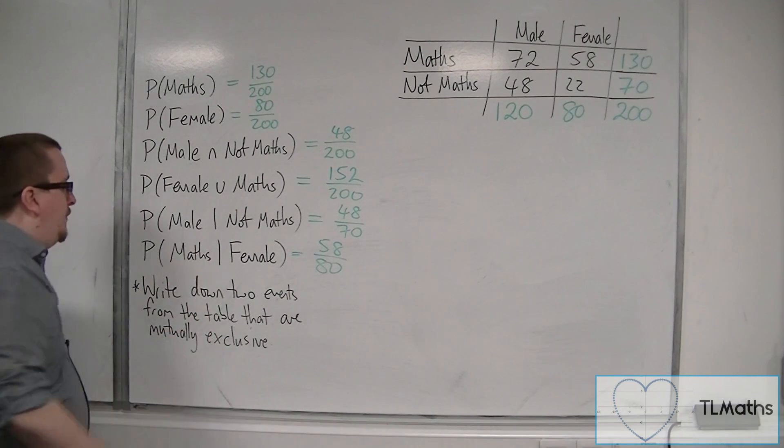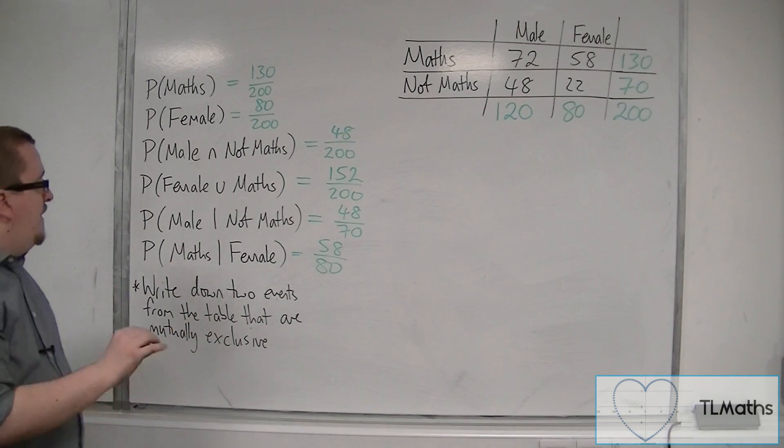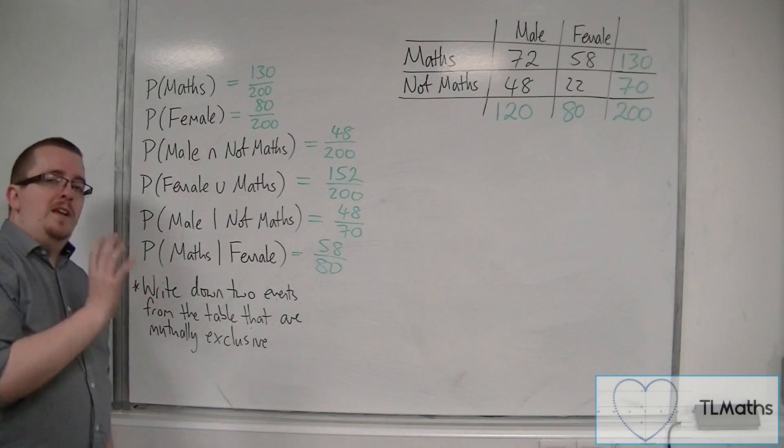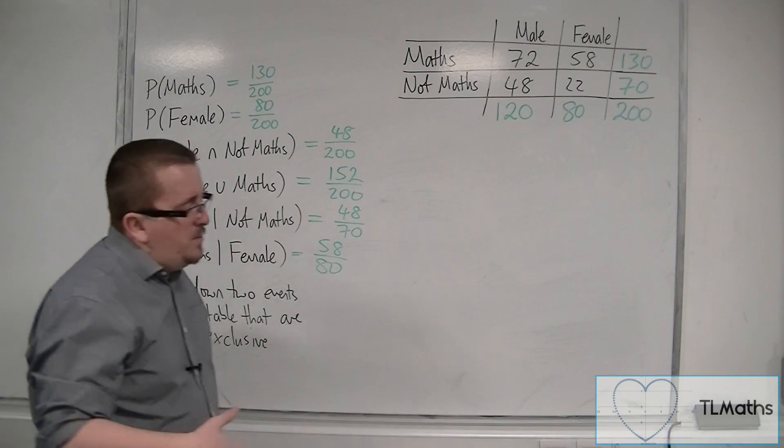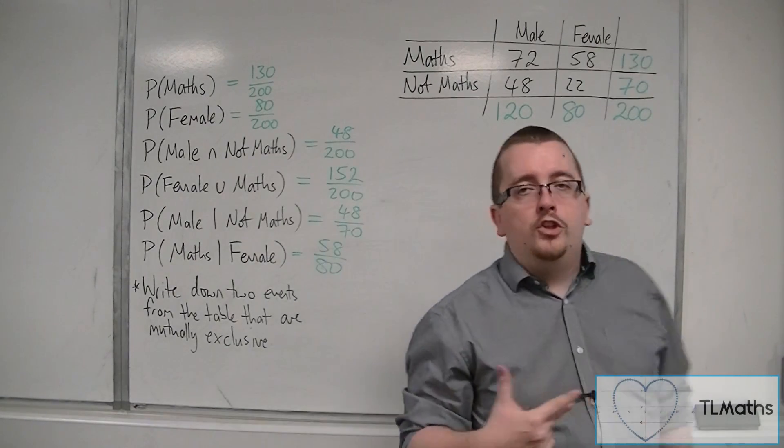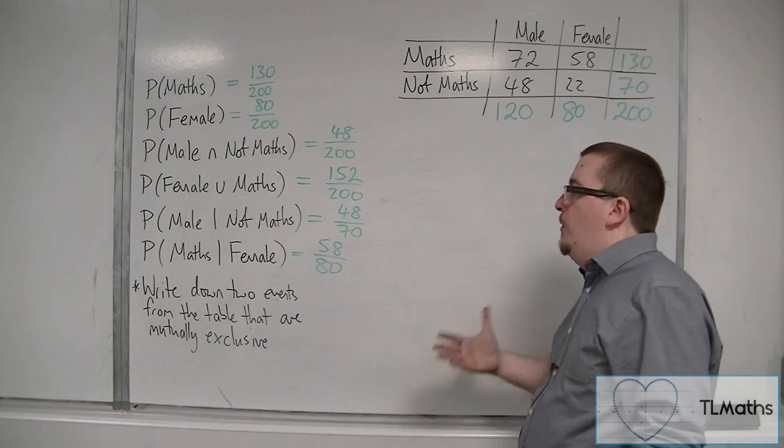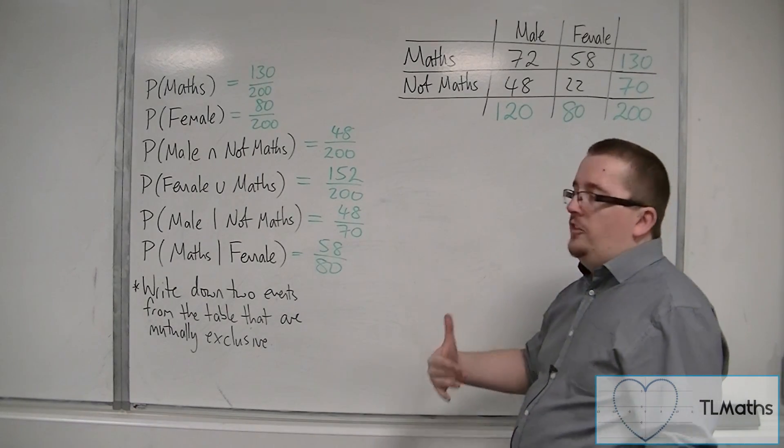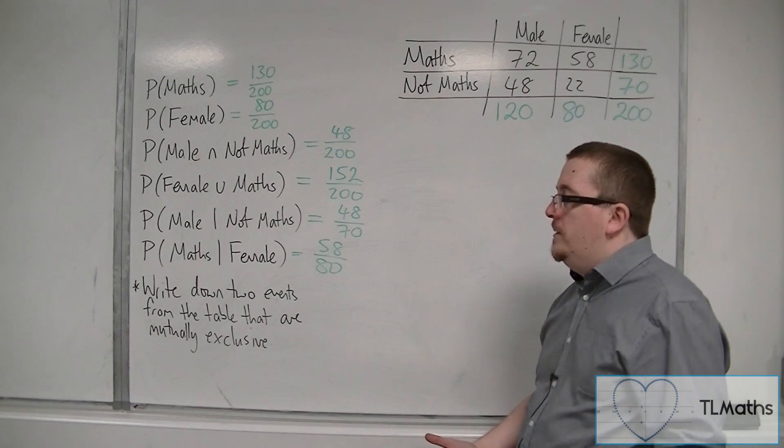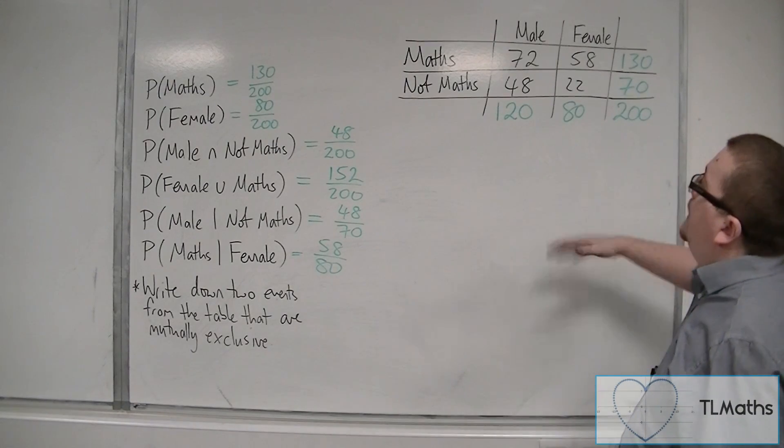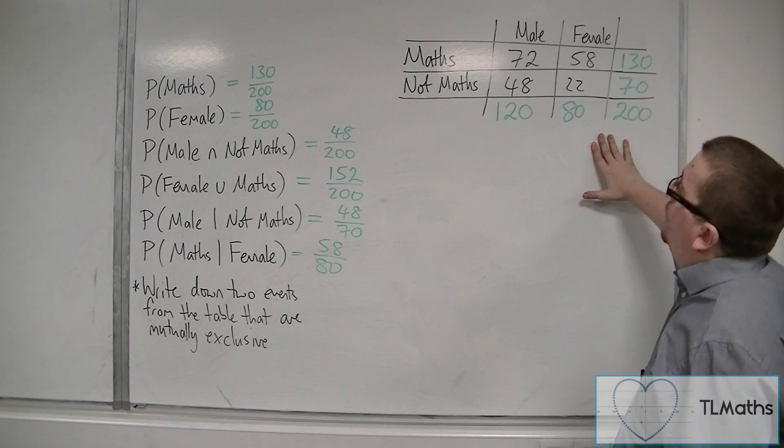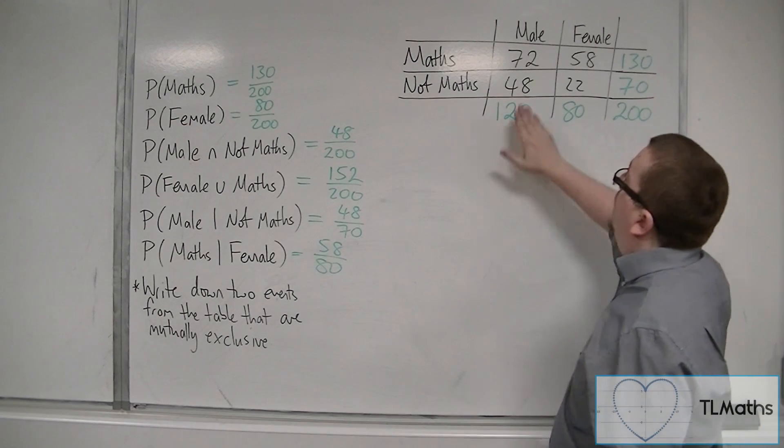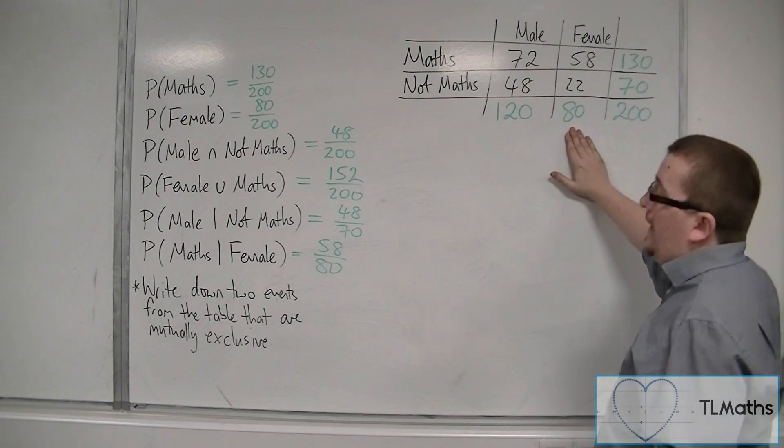Now I've also written down this question here: write down two events from the table that are mutually exclusive. So I just wanted to bring back that terminology. What does it mean for two events to be mutually exclusive? Well, that means that the two events can't happen at the same time.